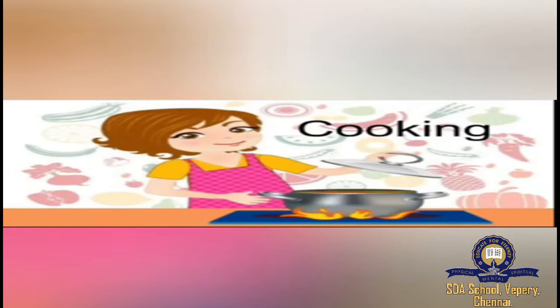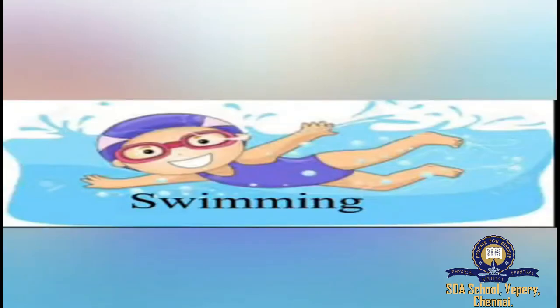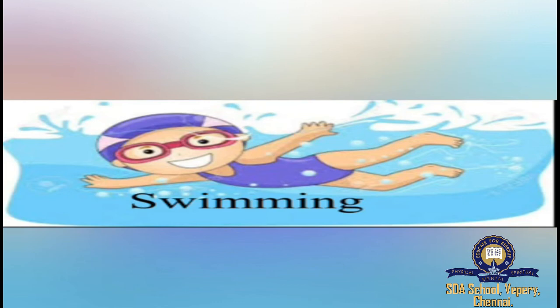What is she doing? Cooking. We use water for cooking. The spelling of cooking is C-O-O-K-I-N-G. So we are learning bathing, wiping, drinking, and cooking. Water is also used for swimming. After learning swimming only, you should swim in the water — without learning, you should not swim in the water. The spelling of swimming is S-W-I-M-M-I-N-G.